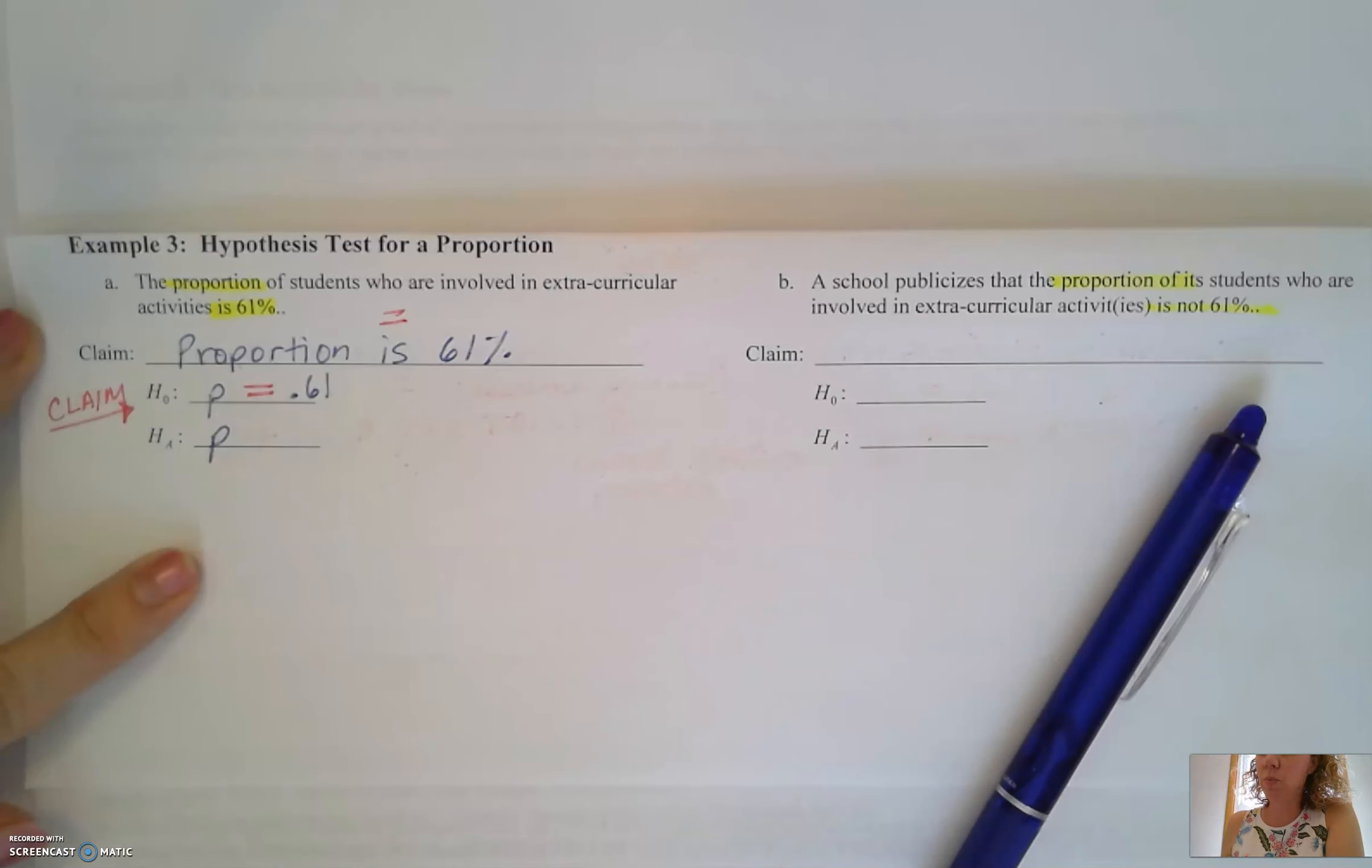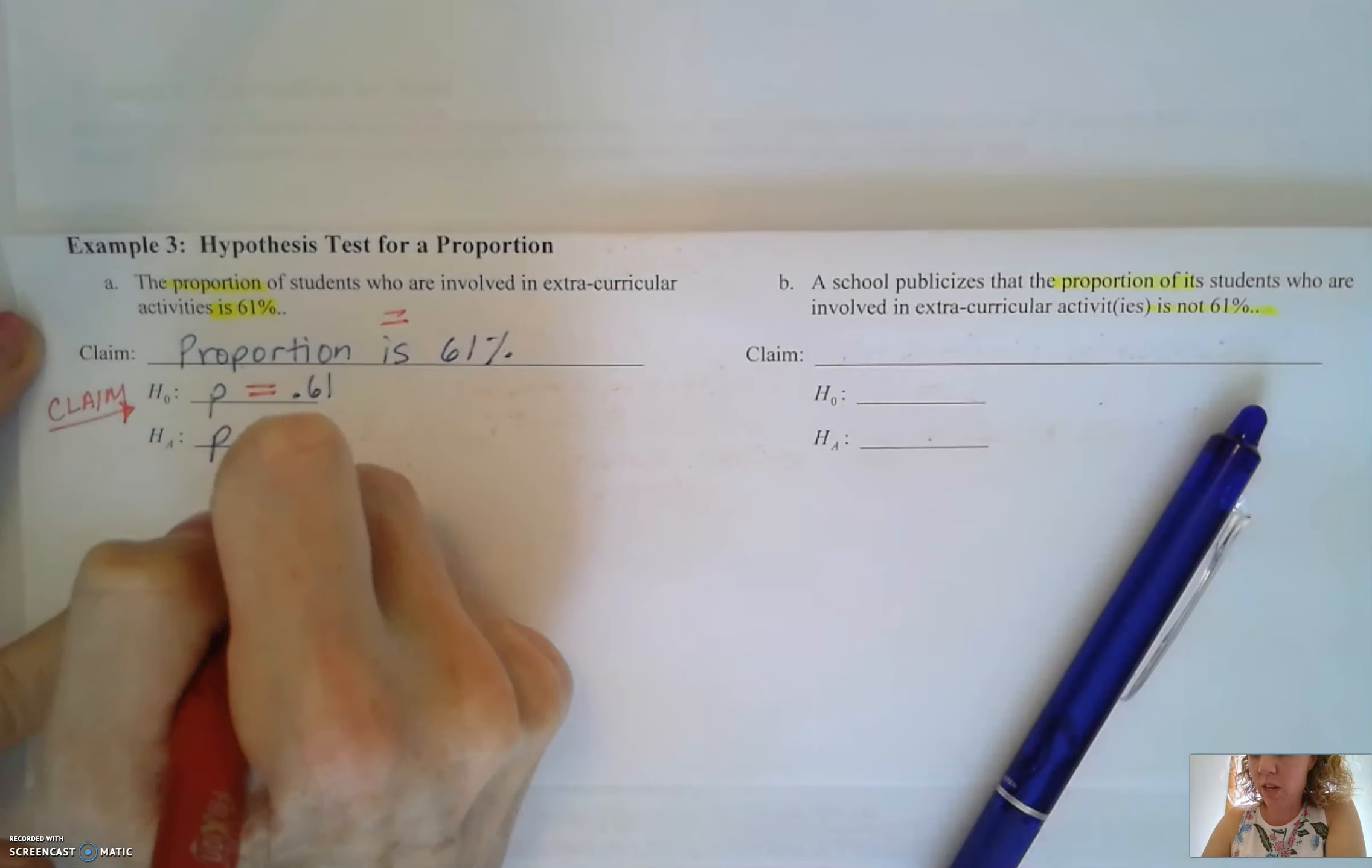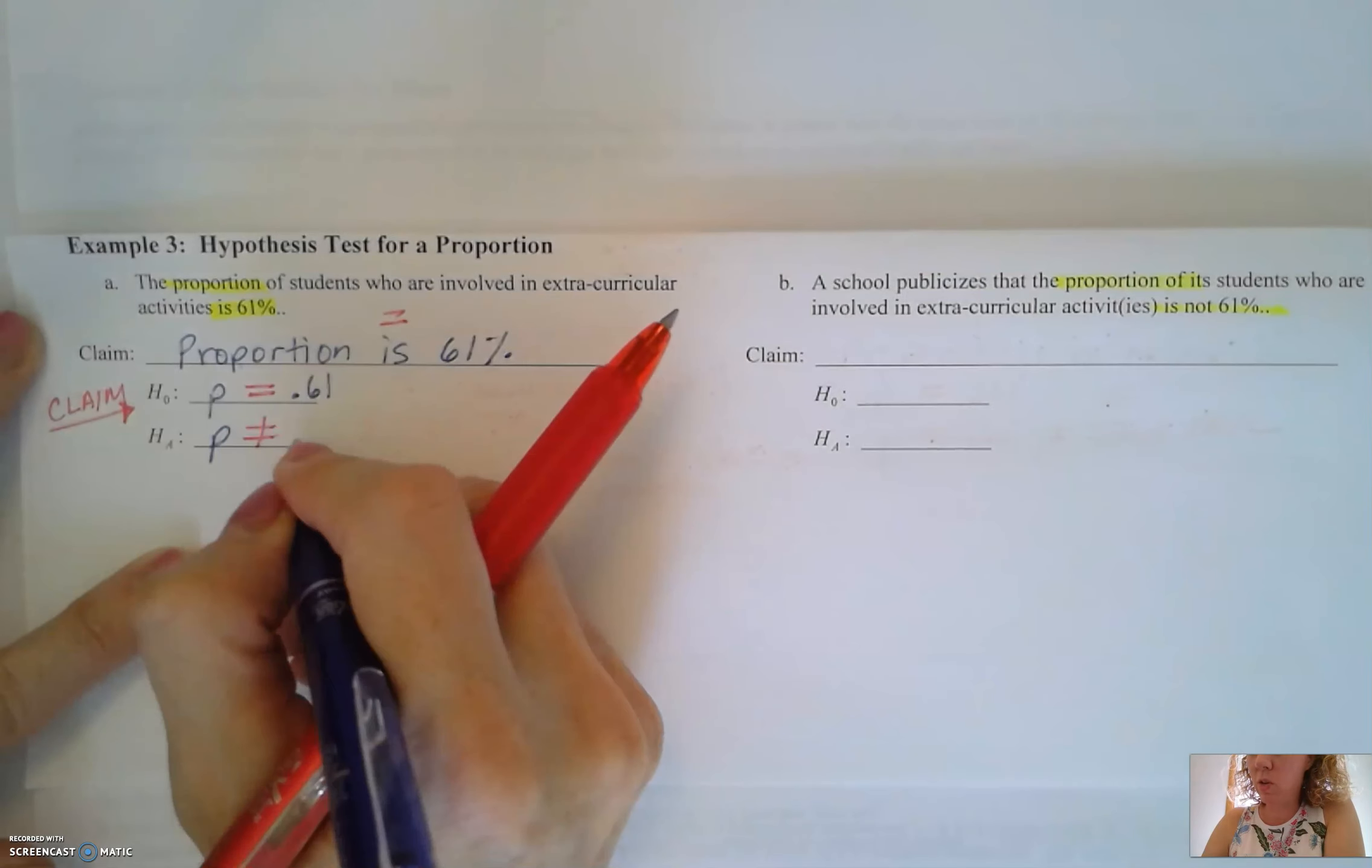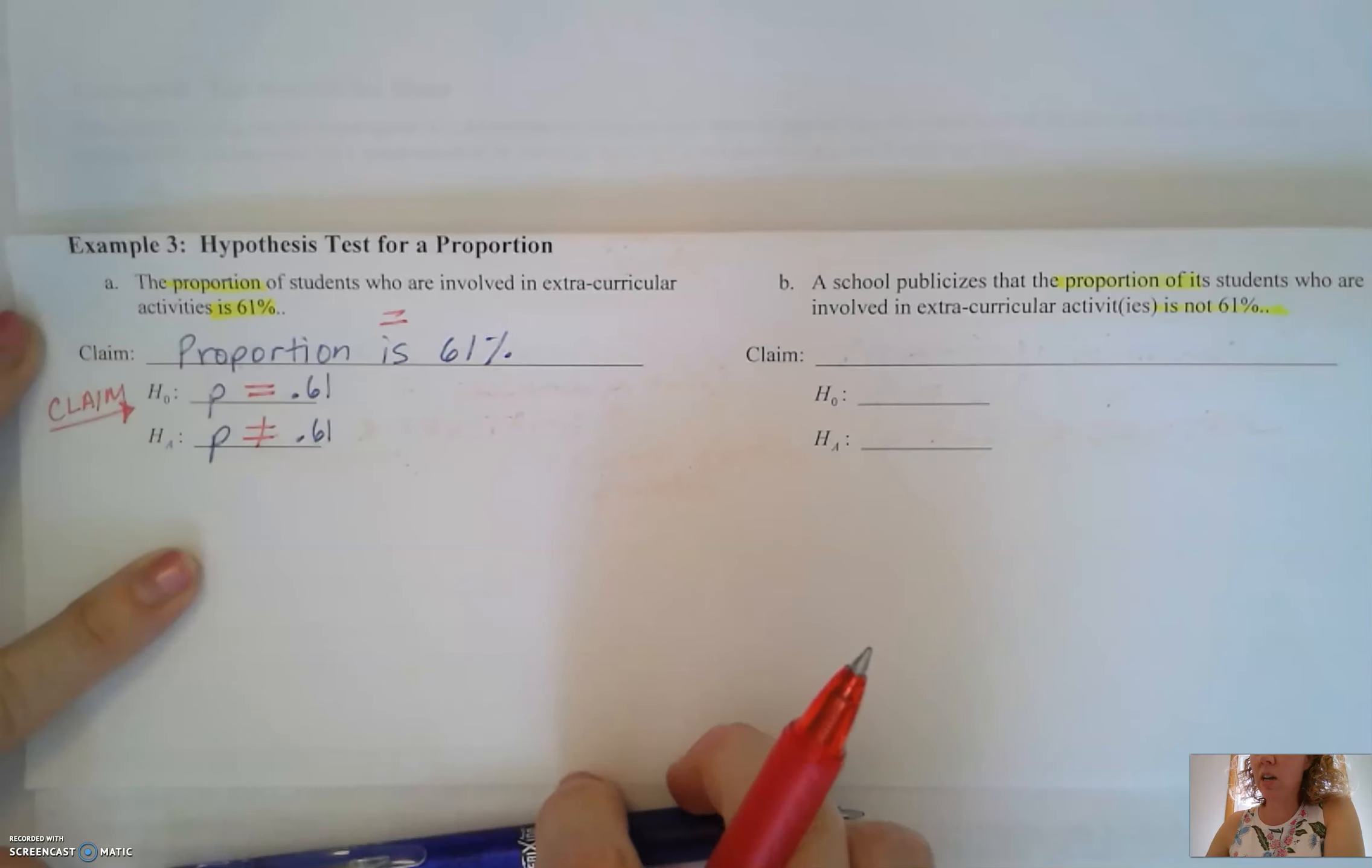Remember our alternative hypothesis is the complement or if it's not equal to. So if it's not equal to, P is going to be not equal to 0.61. So our alternative is P is not equal to 0.61.